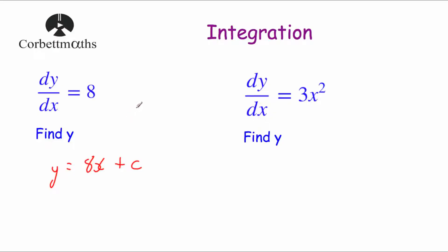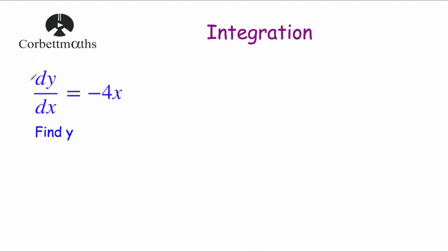If you watch the differentiation videos, you'd be happy that whenever you had something like 20x and differentiated it, you'd get 20. Next question: dy by dx equals 3x squared. To find y, we integrate: increase the power of x by 1 to get x cubed, then divide by the new power — 3 divided by 3 is 1 — so y equals x cubed. Then we have dy by dx equals minus 4x. Increasing the power gives x squared, minus 4 divided by 2 is minus 2, so y equals minus 2x squared plus c.